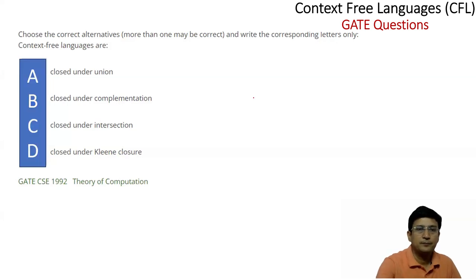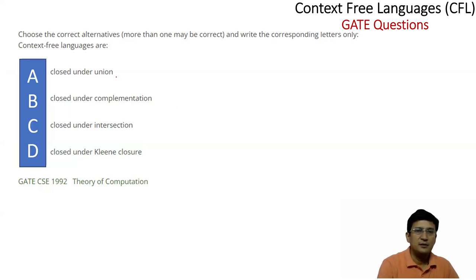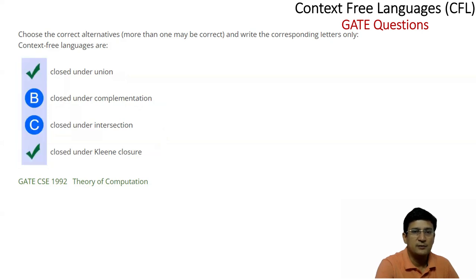Let's see this question, which asks to choose the correct alternatives — more than one may be correct. This was GATE 1992, when the exam was a written/theoretical examination rather than objective. The question asks which properties context-free languages are closed under. Context-free languages are closed under union — correct. Closed under complementation — wrong. Closed under intersection — wrong. Closed under concatenation — correct. So the two correct options are union and concatenation.